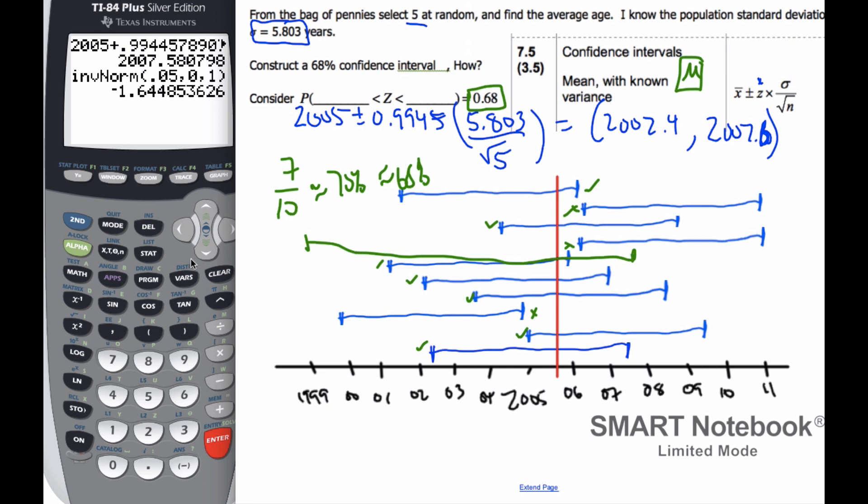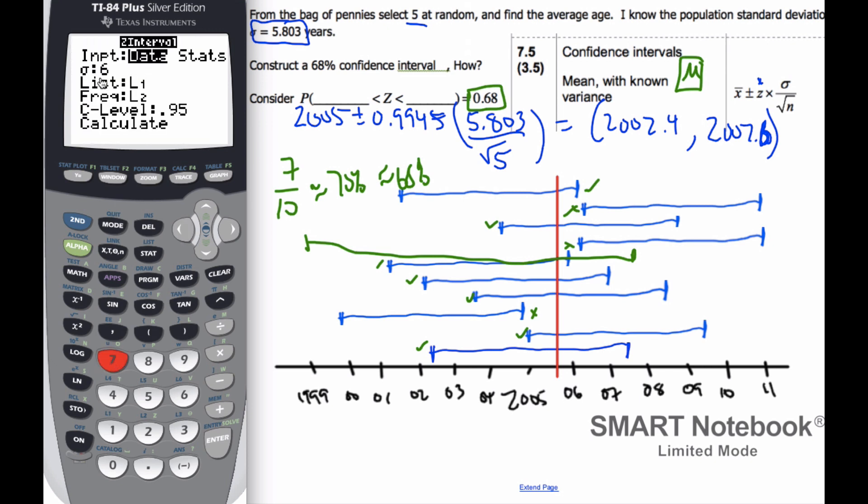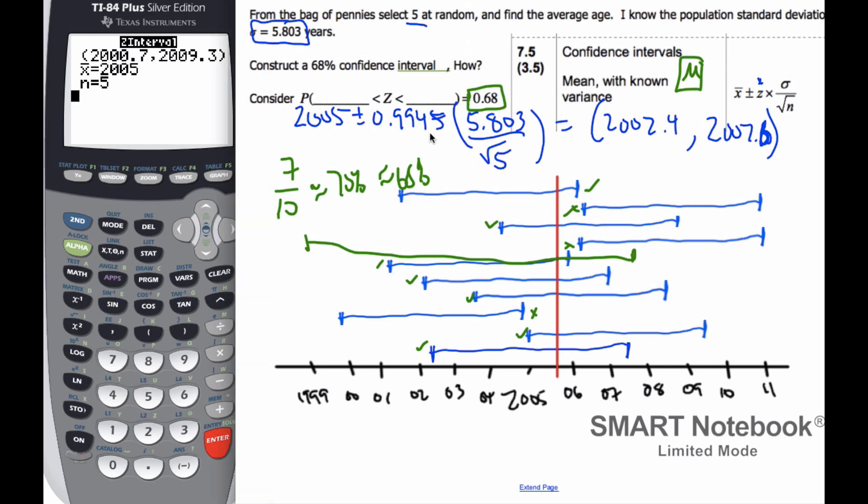If it's 95%, it'll be even more. And if I use my calculator, I can actually calculate a confidence level. Watch and see what I do. If I go statistics and I'm going to go to tests and if I go to Z interval, now there's lots of different tests and we're going to learn what a lot of them do. But if I do Z interval and I'm going to put in statistics. My mean is 5.803. My X bar, well, let's say it was 2005 again. My sample is N. And let's do a 90% confidence interval. And so if I do that calculation, I now extend this line from 2000. And now this green line was just a guess. But it's actually going to go from 2000.7 to 2009.3.